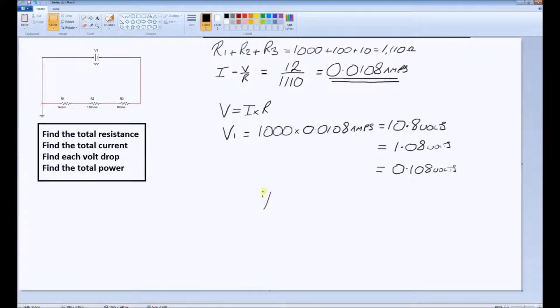Finally, power dissipated. There are three ways of working out power. They are: the voltage times the current, or the current squared times the resistance, or finally the voltage squared divided by the resistance.